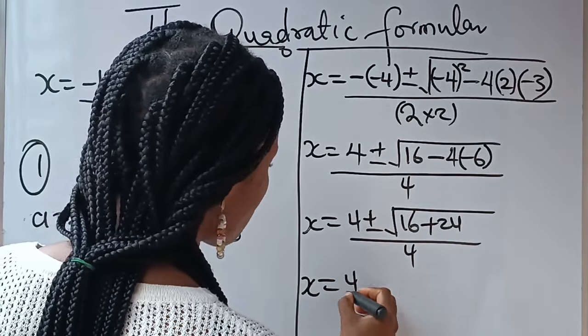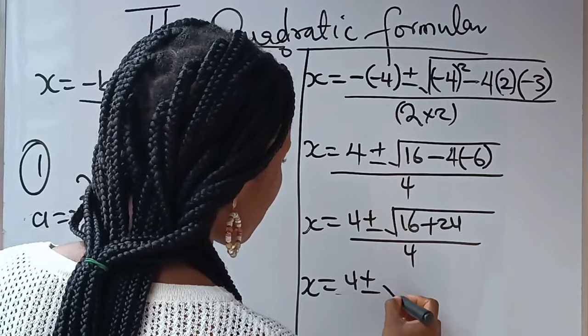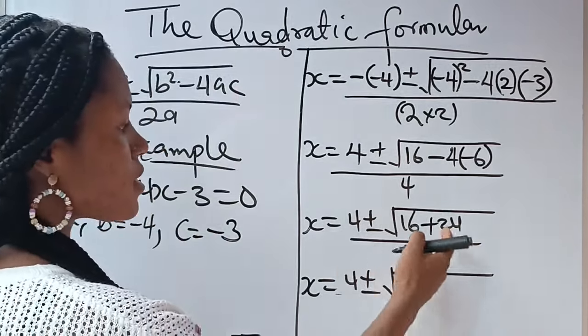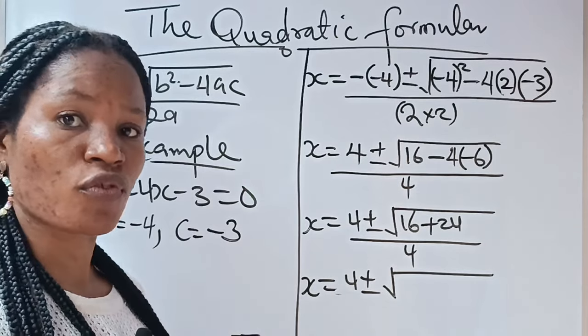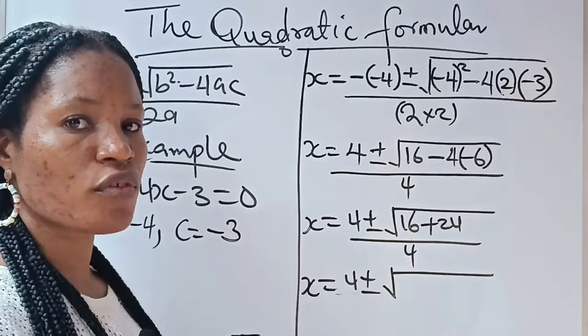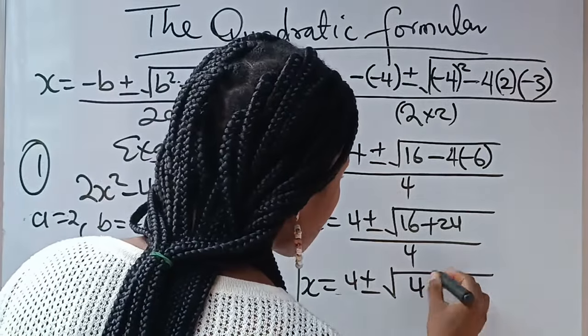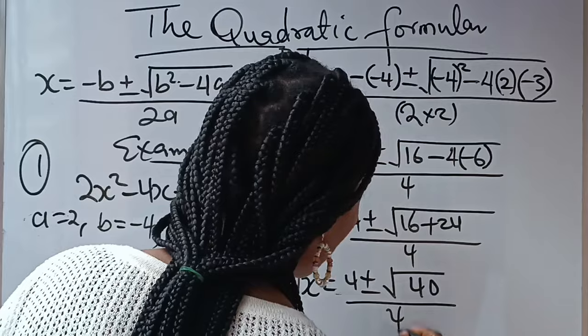Divided by 4. Now, our x = 4 ± √(16 + 24) is going to give you 40. Yes, 16 plus 24 will give you 40. So, you write 40 over 4.